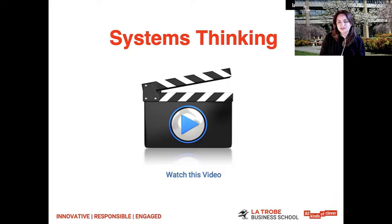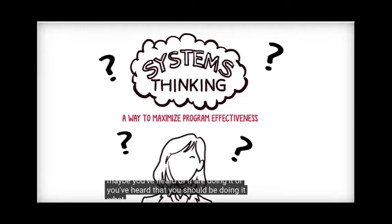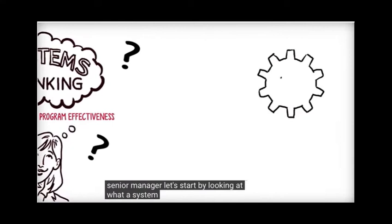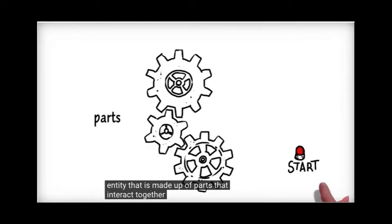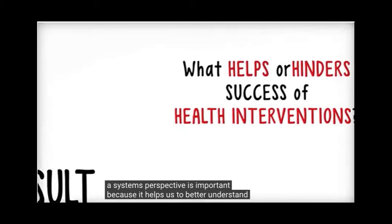Systems thinking: a way to maximize program effectiveness. Maybe you've heard of it, are doing it, or you've heard that you should be doing it. What is it, and what does it mean for the senior manager? Let's start by looking at what a system is. A system is any kind of entity that is made up of parts that interact. Together these parts and their interconnections create a whole, which in turn produces some kind of result. Using a systems perspective is important because it helps us to better understand what helps or hinders the success of health interventions.